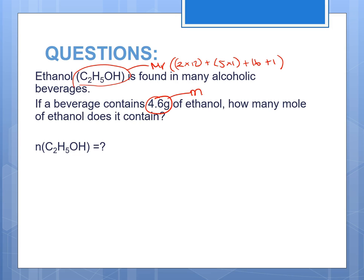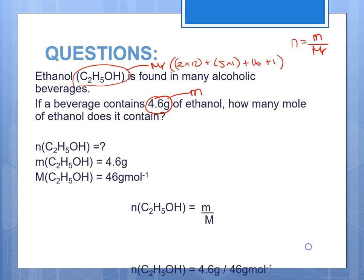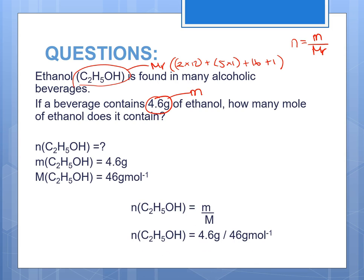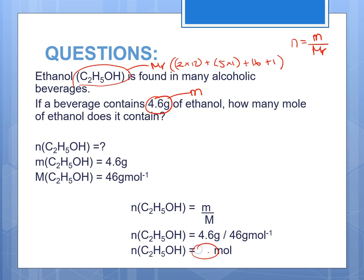We also have mass, so with mass and MR we must be using the formula n = m ÷ MR. The number of moles of ethanol equals 4.6 grams divided by 46 grams per mole, which gives us 0.1 moles.